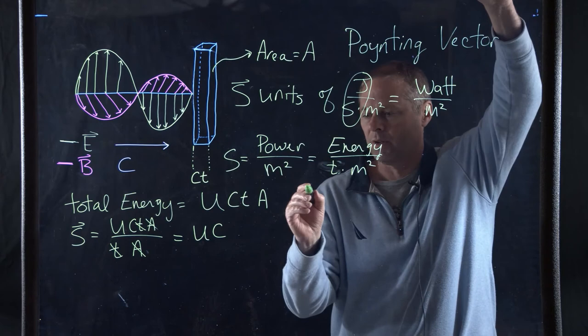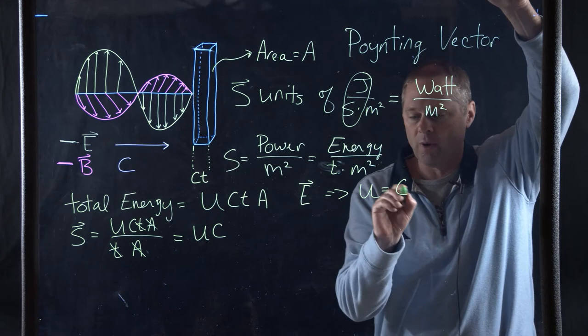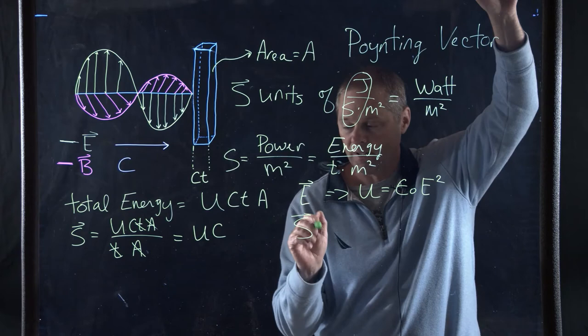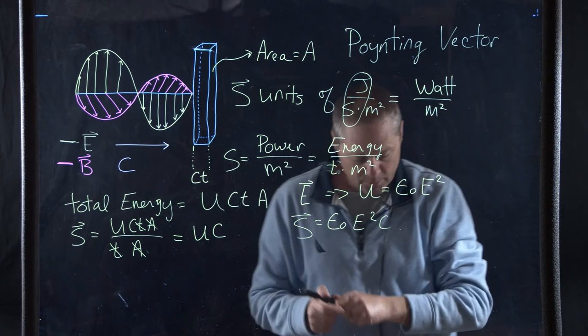So I'm going to use green once again. I know I probably shouldn't use green here, but I'm going to use green once again, and we're going to look at the electric field. Now, if you recall, from the electric field, our U for that was equal to epsilon naught, the intensity of the electric field squared. Therefore, our Poynting vector for the electric field is going to be equal to U, which is epsilon naught E squared times C.